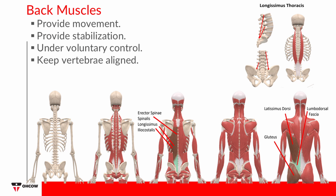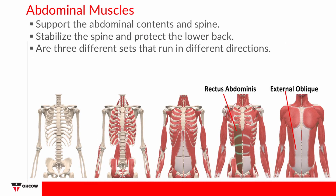The muscles of the back are attached to bone by tendons and help to keep vertebrae aligned, providing movement and stabilization of the spine. The main function of the back muscles is postural — keeping the vertebrae aligned and balanced. The abdominal muscles support the abdominal contents and spine, stabilize the spine to protect the back, and maintain balance. There are three sets of abdominal muscles that run in vertical, perpendicular, and angled directions. When used, the abdominal muscles increase intra-abdominal pressure to help support the spine when lifting high loads. It is important to strengthen both the back and abdominal muscles equally so that one muscle group will not overpower the other.